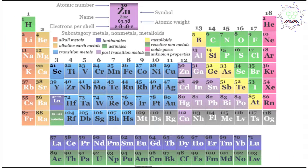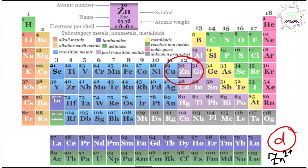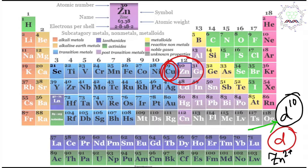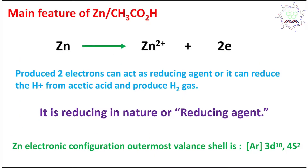First, where does zinc actually reside? Zinc is a d-block element, but it is generally not called a transition metal because its most stable oxidation state is Zn²⁺, where the d orbital is completely filled. Compare this to copper, whose stable oxidation state is +2 (d⁹), which is why copper is called both a d-block element and a transition metal.